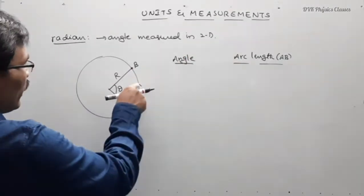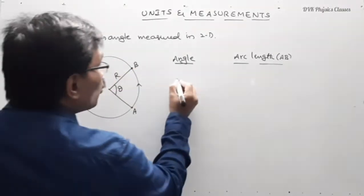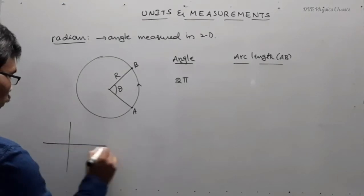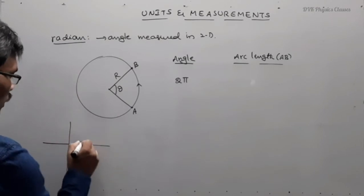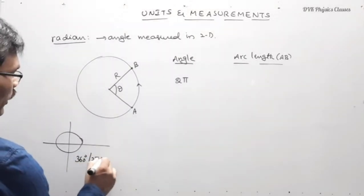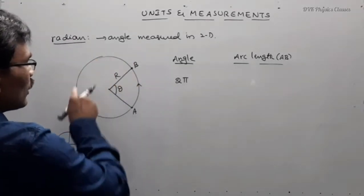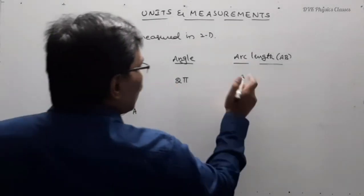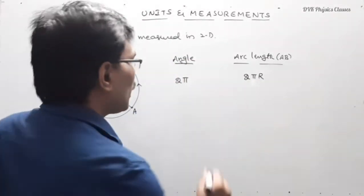When I complete one round in the circular path, what is the angle I have covered? 2 pi radians or 360 degrees. If you divide the total plane into four quadrants: 0 to 90, 180, 270, 360 — that means when I complete one round. So when the angle covered is 2 pi, the linear distance traveled equals the circumference of the circle. So when angle made is 2 pi radians, the length covered is 2 pi r.